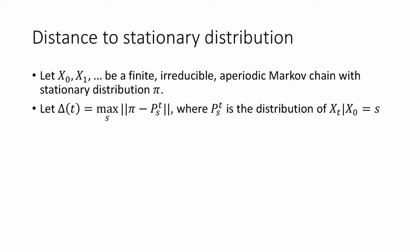Now we're going to define Δ(t) to be the maximum over all states s of the total variation distance between the stationary distribution π and the distribution p_s^t, where p_s^t I'm defining to be the distribution of x_t conditioned on x_0 being equal to s.